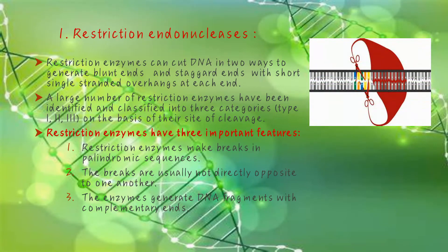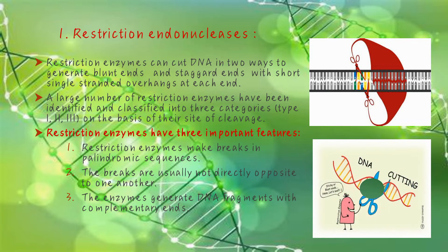Restriction endonucleases. Restriction enzymes can cut DNA in two ways to generate blunt ends and staggered ends with short single-stranded overhangs at each end. A large number of restriction enzymes have been identified and classified into three categories: type 1, type 2, and type 3, on the basis of the site of cleavage.